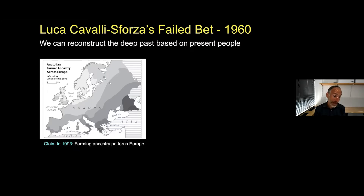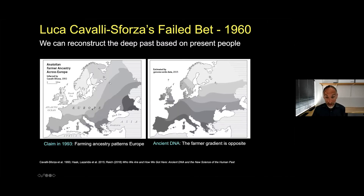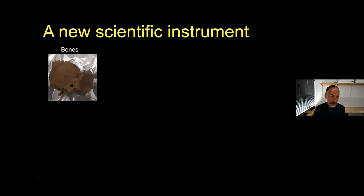This is a redrawing of a map first made by him and his colleagues in the 1970s, showing a primary gradient of variation in Europe moving from southeastern to northwestern Europe. He and his colleagues interpreted this as different proportions of ancestry tracking the spread of farming into Europe after 8,500 years ago from the Near East. But now with ancient DNA from first farmers, we know that the proportion of farmer ancestry is actually almost the opposite of what's shown — going more from south or southwest to northeast. The reason is that the spread of farming wasn't the only population change that transformed Europe.